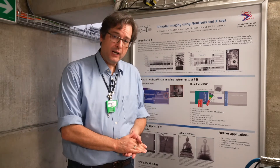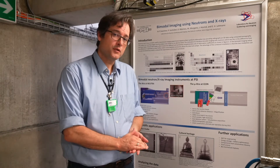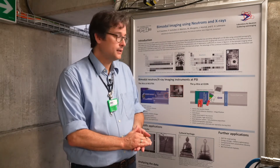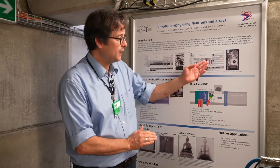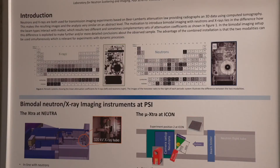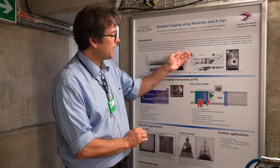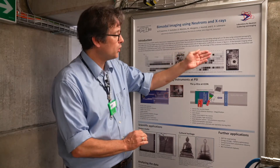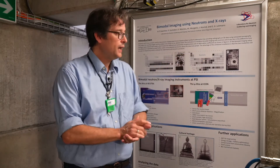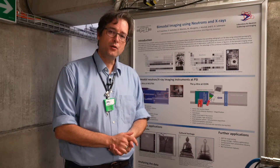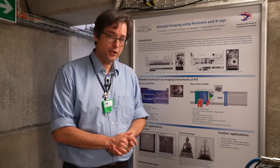Some heavy elements such as metals — for example lead — are very easily penetrated by neutrons, while some light elements such as hydrogen, lithium, or boron attenuate the neutrons considerably.